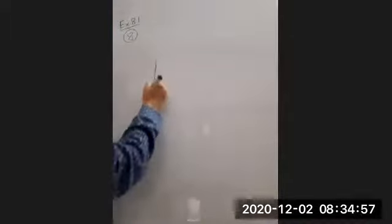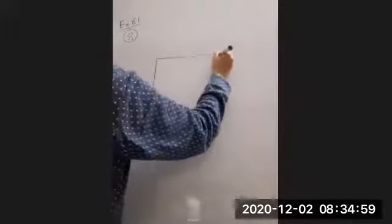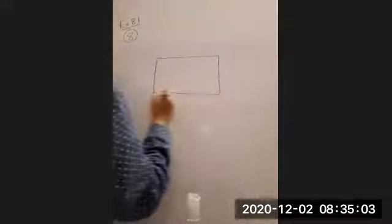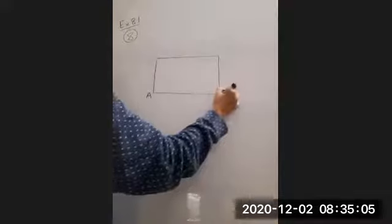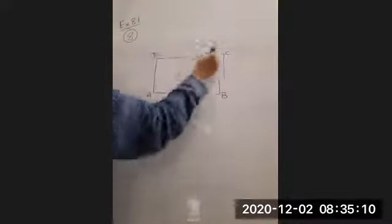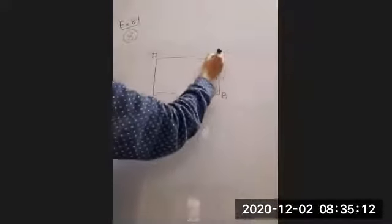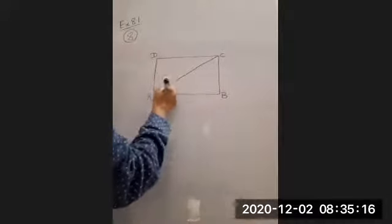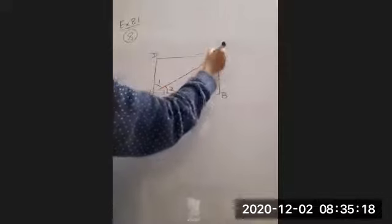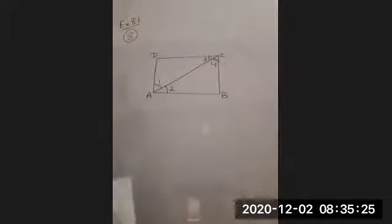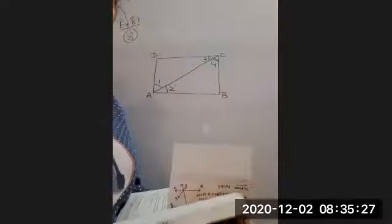So now we are given a rectangle. In this rectangle ABCD, we are given that this diagonal AC bisects angle A, that means angle 1 is equal to angle 2. So that means angle 3 is also equal to angle 4.